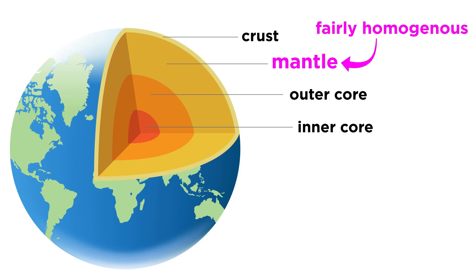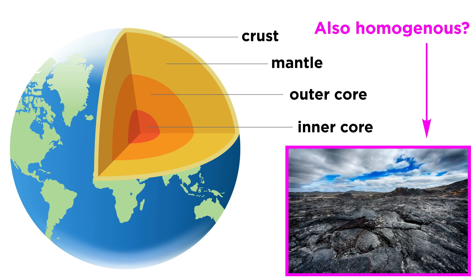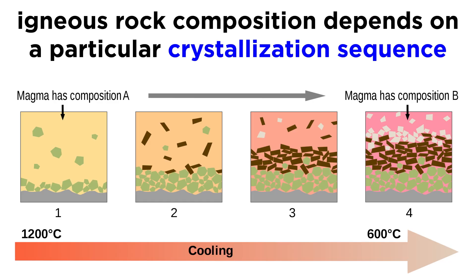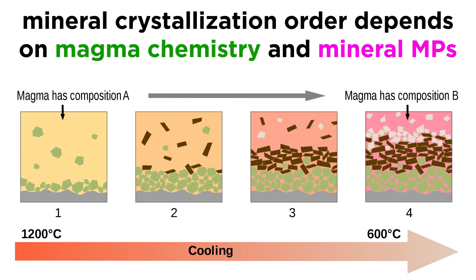Since most igneous rocks are derived from the mantle, which is relatively chemically homogeneous, we might expect igneous rocks to also be this way, but they aren't. To understand this, we must first discuss the crystallization process, and more importantly, crystallization sequence. In a cooling magma, crystallization order is dependent upon the chemistry of the magma and the relative melting points of the stable minerals. Since most magmas are derived from melting the same stuff — the mantle — we can ignore the influence of chemistry for these purposes.